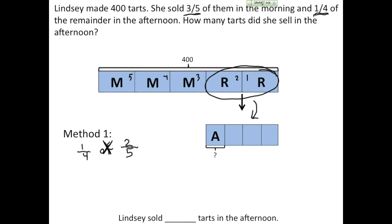So we want to find one-fourth of two-fifths and that would be the fraction of tarts that were sold in the afternoon. So I'm going to solve, cross-cancel, and multiply my numerator and denominator and I get one-tenth, which means that this unit is one-tenth of the whole bar that we originally drew, this whole bar.